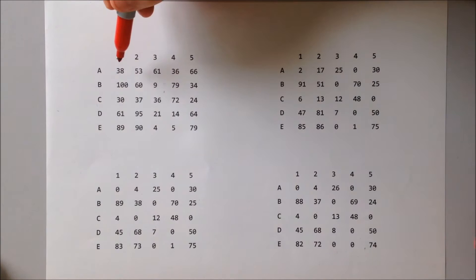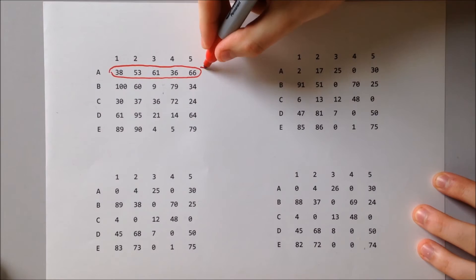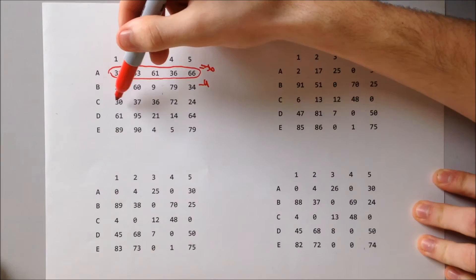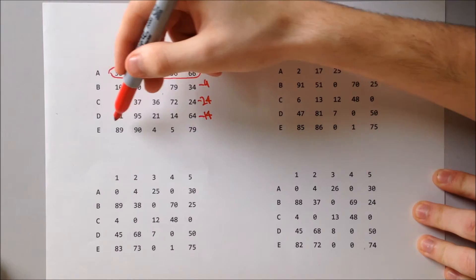Here is a harder example. We have a five by five matrix. Step one, as before, is to reduce each row by the minimum. The first row, we're going to take away the number 36 from each element. Next row will be 9, then the next row 24, then 14, and finally number 4.